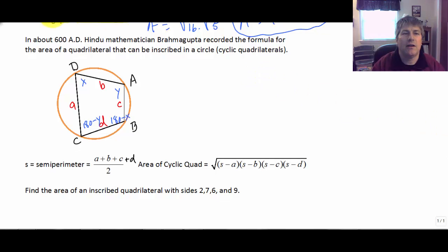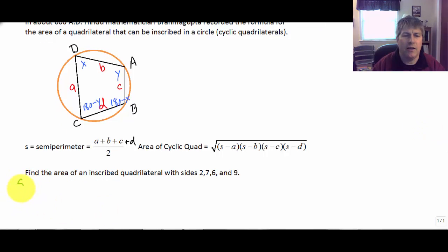So let's take a look at another sample problem. Let's find the area of an inscribed quadrilateral with sides 2, 7, 6, and 9. And it doesn't really matter which ones are A, B, C, and D. So let's go ahead and calculate our semi-perimeter: 2 plus 7 plus 6 plus 9. 15 and 9 is 24 over 2 is 12. So our semi-perimeter is 12.